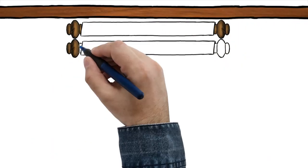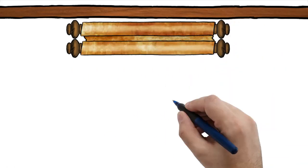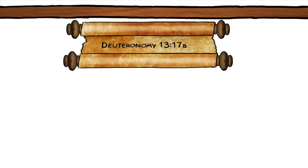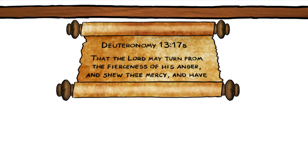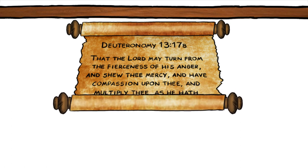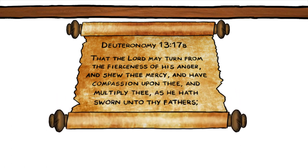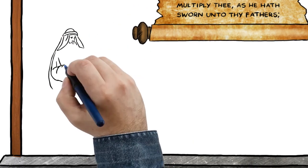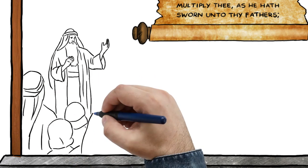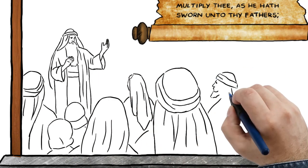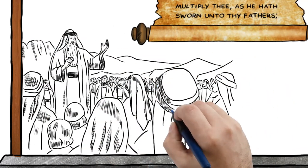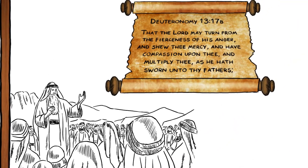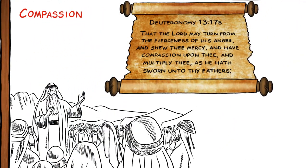The first time the Hebrew word translated into English as compassion appears on the pages of Scripture is in Deuteronomy 13:17b. It is there we read the following: that the Lord may turn from the fierceness of his anger and show thee mercy and have compassion upon thee and multiply thee as he has sworn unto thy fathers. The Song of Moses prophesies that the children of Israel will not heed God's warning to love and worship him alone, and as a result will bring upon themselves dislocation, heartache, poverty, and too many sorrows to even enumerate. This is the context for the introduction of the Hebrew word literally translated compassion.